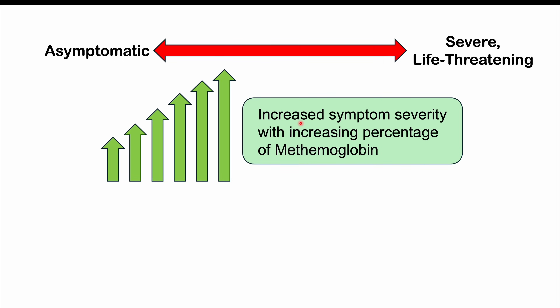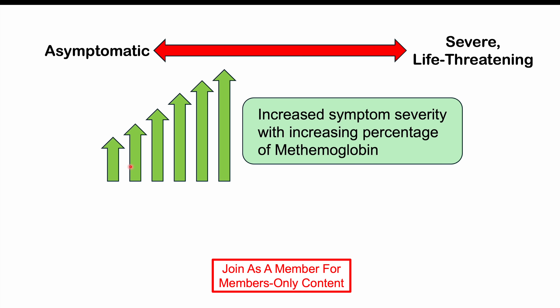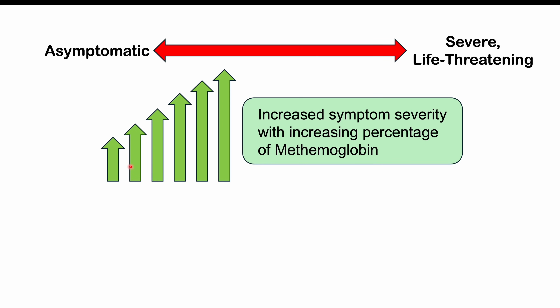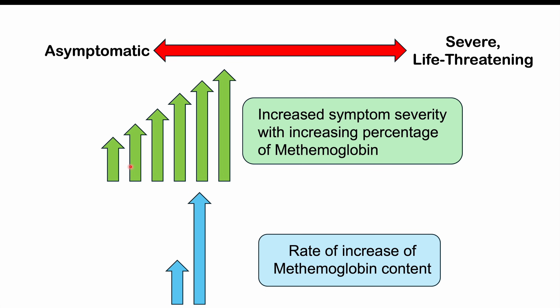There is increased symptom severity with increased percentage of methemoglobin. The rate of increase of methemoglobin content is also important — rapidly going from 1% to 20% methemoglobin can cause more severe symptoms. Even at small percentages like 5% to 10%, a patient with pre-existing anemia, cardiac, or respiratory issues can experience signs and symptoms quite severely. So this can be a very important condition to watch out for, especially in patients who have prior cardiopulmonary issues.